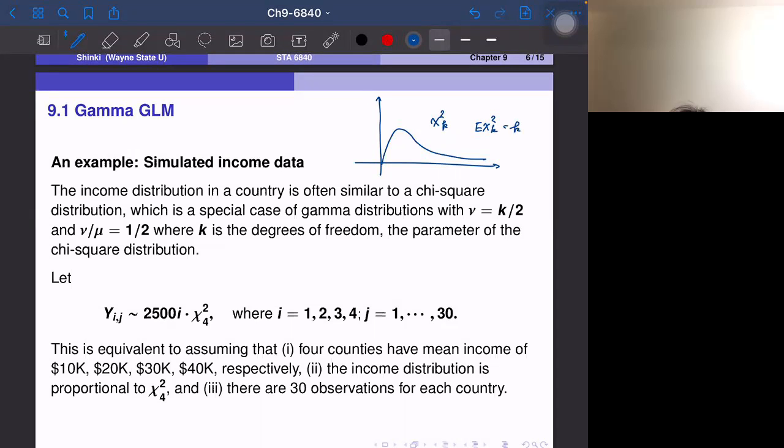And this is actually the sum of K independent and identically distributed standard normal random variables. But anyway, so this is a special case of Gamma GLM with this relationship.